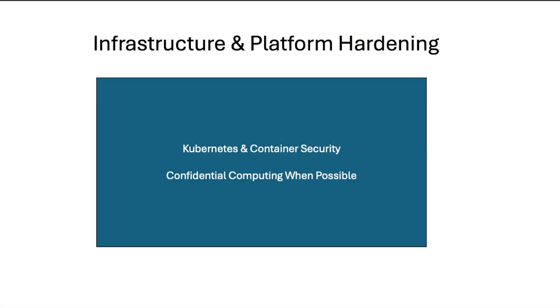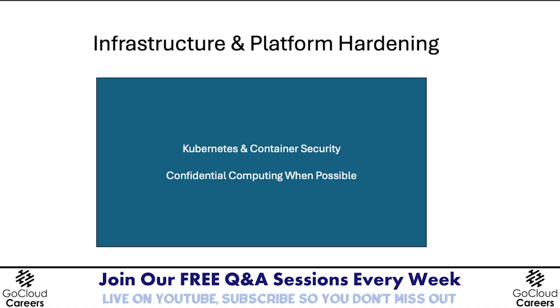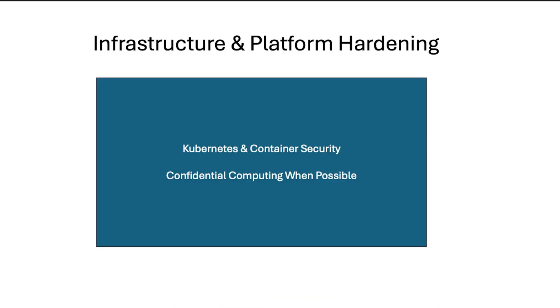Infrastructure hardening covers the systems we're running: operating systems, virtual machines, securing our Kubernetes environment — think of Kubernetes as open and insecure until you do work with it — securing our containers and VMs. When possible, use confidential computing, where data sent to the CPU remains encrypted. That means encrypted in storage via storage encryption, encrypted in flight with TLS, and even encrypted in DRAM and on the CPU.